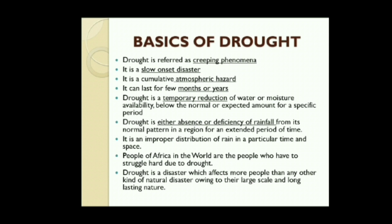It can last for few months or years, but sometimes it lasts for a few days, say 15 days. Drought basically implies dry parched land, scarcity of water and food, malnutrition, unemployment, and bad living conditions. Drought is a temporary reduction of water moisture availability below the normal or expected amount for a specific time period. Drought means absence or deficiency of rainfall from its normal pattern in a region for an extended period of time. It is an improper distribution of rain in a particular time and space.